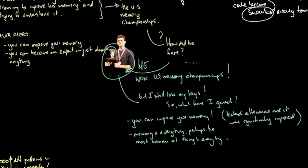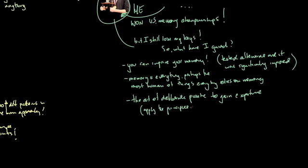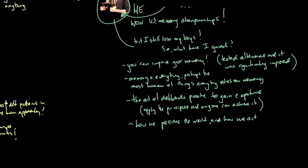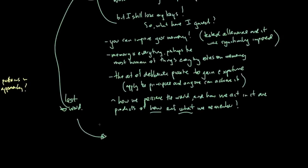He also learned how important memory is, and it's narrated throughout the book. It's almost the most human of things, and everything relies on memory, from what he can ascertain. The other key point is the art of deliberate practice to gain expertise. It's an essential ingredient in gaining any expertise. He emphasizes constantly throughout the book that it's the primary factor to get a particular skill set up to a level which you'd be classified as expert. The other comment he makes is how we perceive the world and how we act in it are products of how and what we remember. So memory is the most human of all things.